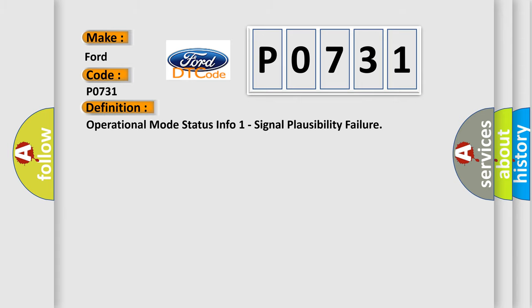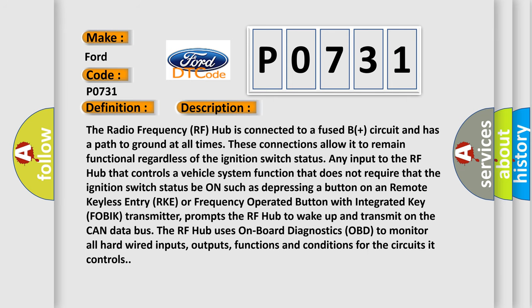The basic definition is: Operational Mode Status Info 1 Signal Plausibility Failure. The radio frequency RF hub is connected to a fused B+ circuit and has a path to ground at all times. These connections allow it to remain functional regardless of the ignition switch status. Any input to the RF hub that controls a vehicle system function — such as depressing a button on a remote keyless entry (RKE) or frequency operated button with integrated key (FOBIK) transmitter — prompts the RF hub to wake up and transmit on the CAN data bus. The RF hub uses onboard diagnostics (OBD) to monitor all hardwired inputs, outputs, functions, and conditions for the circuits it controls.